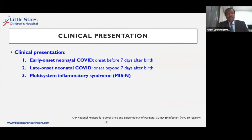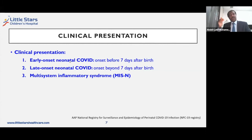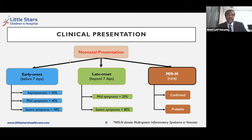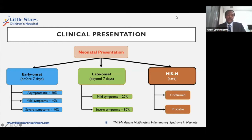Generally speaking, there are three presentations for neonatal COVID, very similar to other infections in neonates. We divide it into early onset neonatal COVID and late onset neonatal COVID, and we have a third category: multisystem inflammatory symptoms. The first is the early onset, which is onset of neonatal COVID within or before the seventh day of life, and then late onset is beyond seven days.